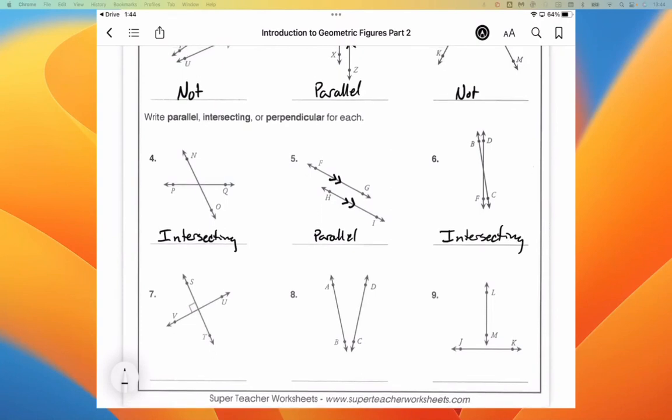Here for number seven, we have both intersecting and perpendicular. I think that they actually only wanted us to write perpendicular, but I am going to say intersecting and perpendicular because that figure is in fact both. For number eight, we sort of have to extend the drawing to see what's going to happen here. Those lines are in fact going to intersect if we extend them, and so we would call that intersecting.